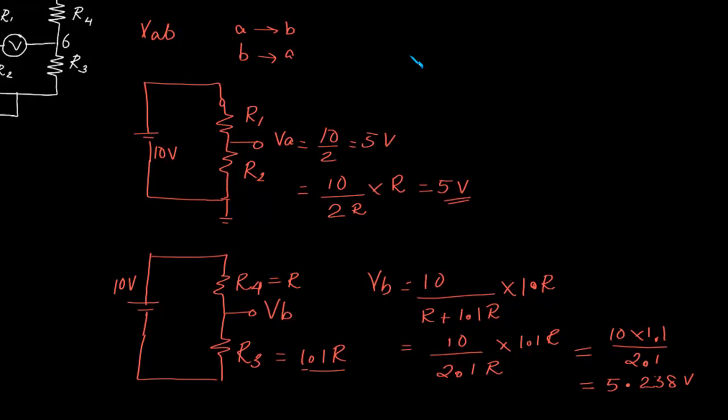Now we have to find out VAB, that is VA minus VB, which is 5 minus 5.238, that is -0.238 volts.